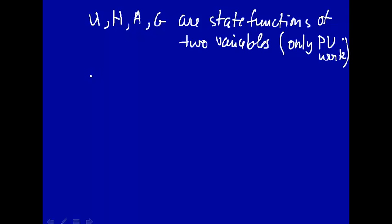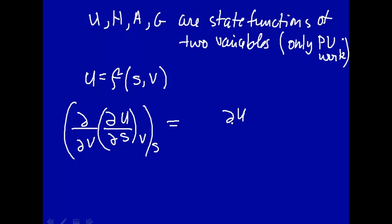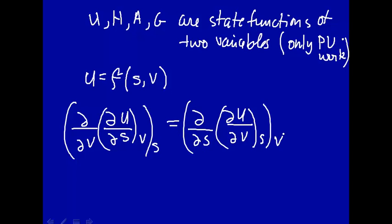What I would like to convince you of is that if we take u, which is a function of the natural variables s and v, and take the derivative of u with respect to s at constant volume, and then take that with respect to the second variable v at constant s — that equals how u changes with v at constant s, and then how that quantity changes with s at constant v. It doesn't matter whether you take the derivative of the first variable and then the second, or the second first and then the first. Those quantities are equal.